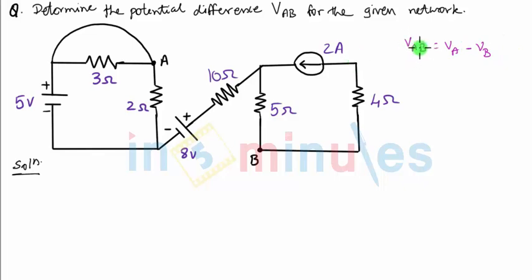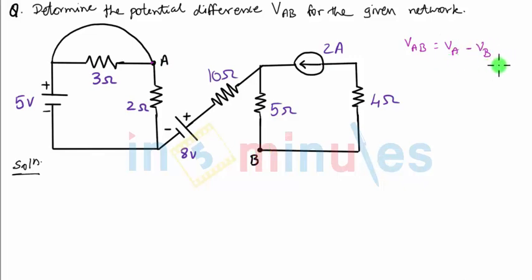One way to calculate VAB is to first calculate VA, which is the voltage at point A. When you talk about a point voltage, it is always with respect to the ground point. So find out voltage at point A with respect to ground, find out voltage at point B with respect to ground — that means VA and VB — and then subtract the two values to get the potential difference VAB.